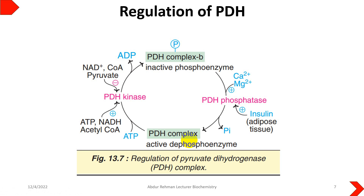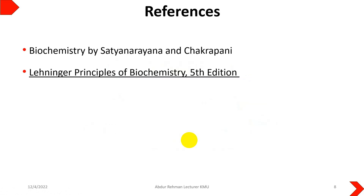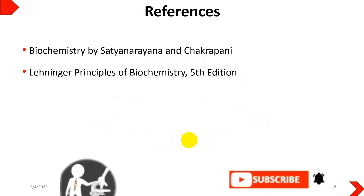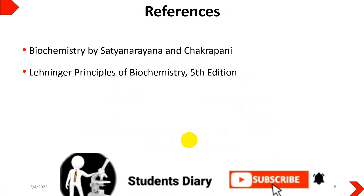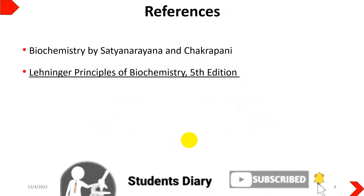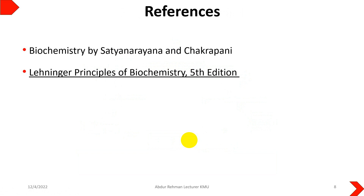This was all about the conversion of pyruvate to acetyl-CoA. Once acetyl-CoA is formed, it enters the Krebs cycle inside the mitochondria.